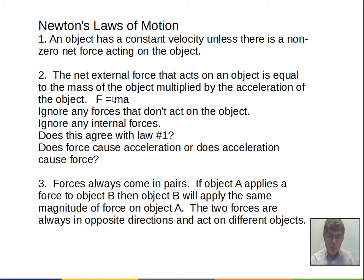The second law is more general and will be used in this chapter and many future chapters. The net external force that acts on an object is equal to the mass of the object multiplied by the acceleration of the object: F equals MA. This force is a vector, the acceleration is a vector. The direction of the acceleration is always the same as the direction of the net force. You can ignore forces that don't act on the object.